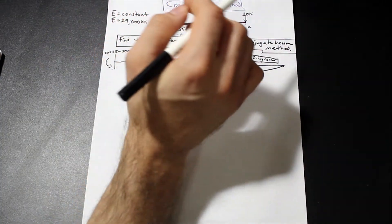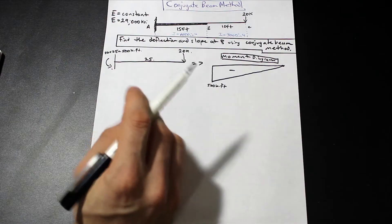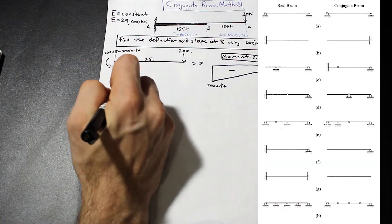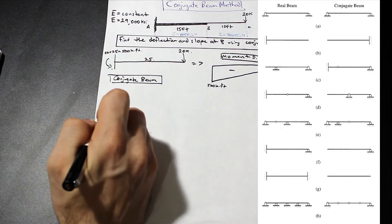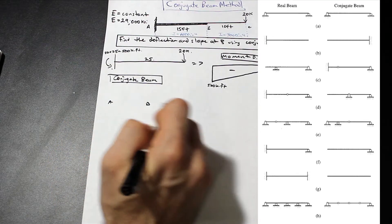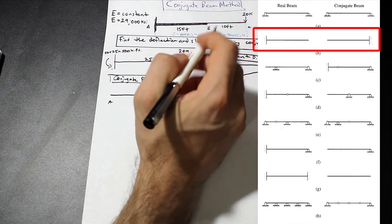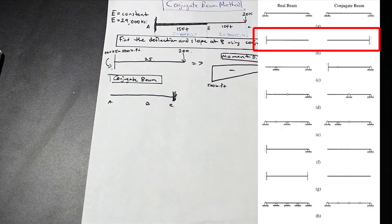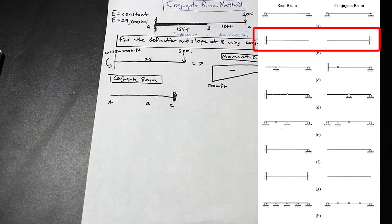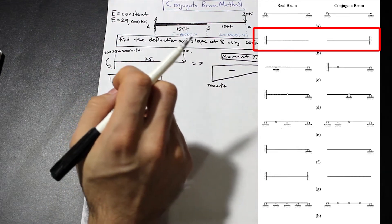Looking at the table: when we have a fixed end we replace it with a free end, and at the free end we replace it with a fixed end — so essentially the beam flips in this case. Every case will be different, and it can get tricky with pins, rollers, and hinges, but as long as you follow the table you're good to go.